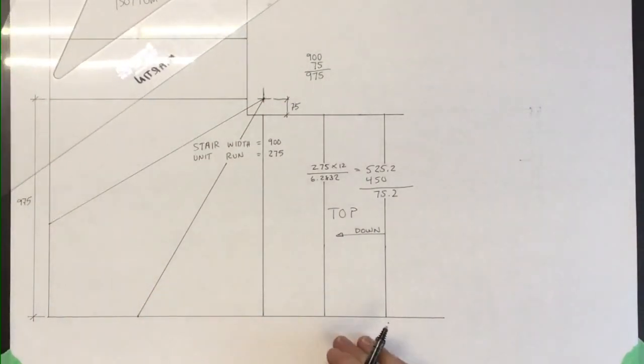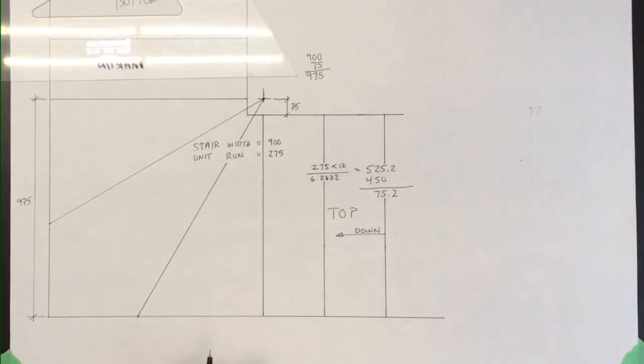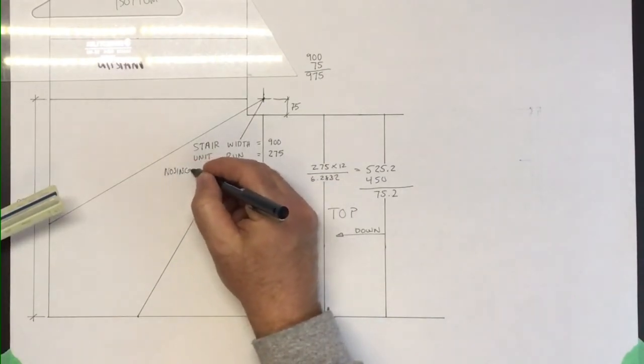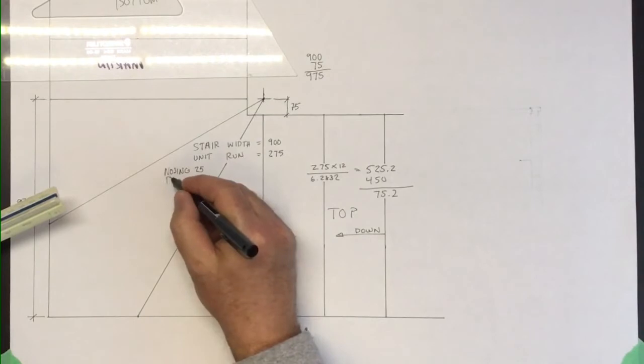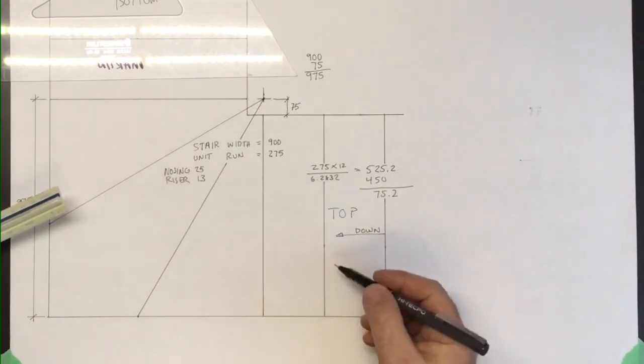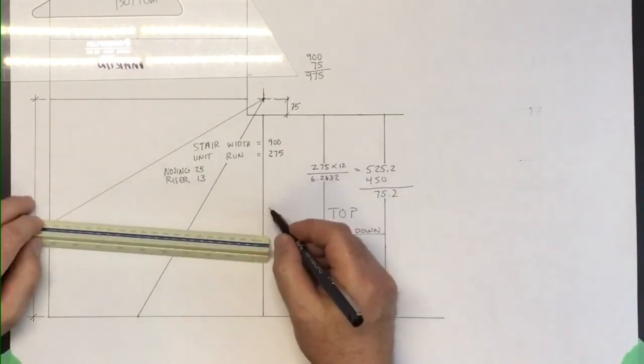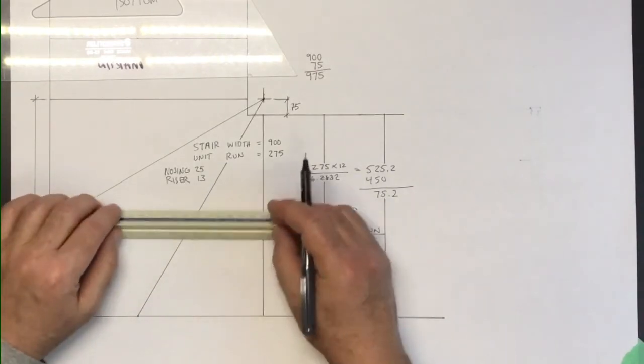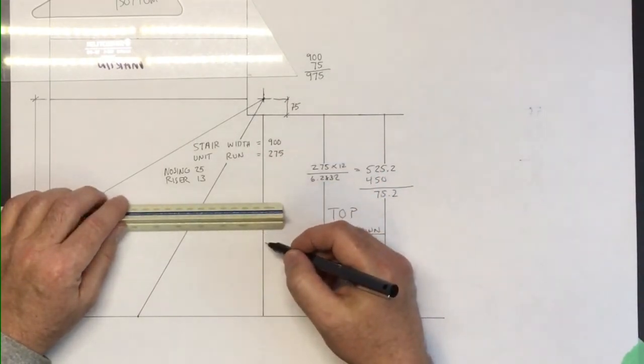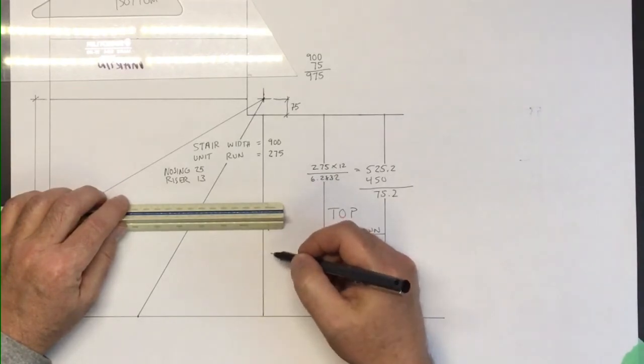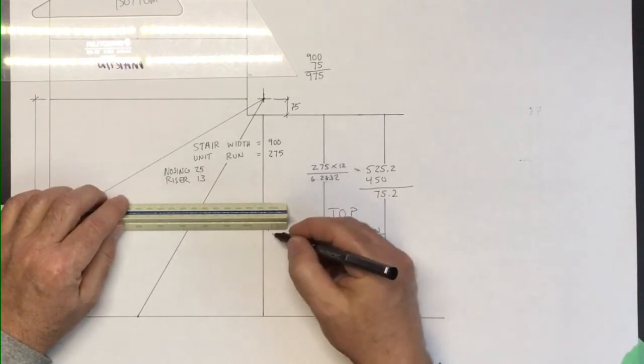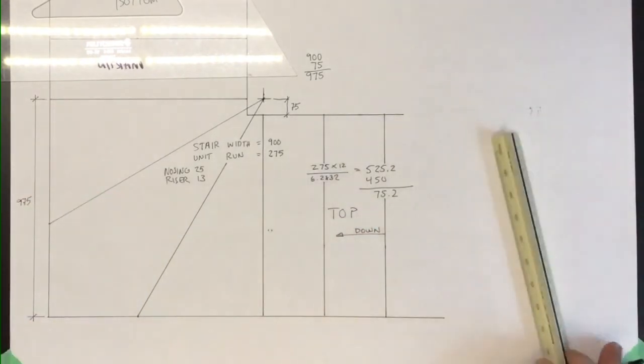And then let's see, let's do a nosing of 25 and a riser of 13. So for example, if I was to draw in this last riser here, I would go 25 back, 10, 25 right there, and then an additional 13. Kind of hard to draw at 1 to 5. At 1 to 1 it should be no problem for you.